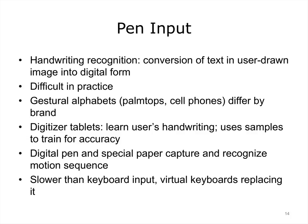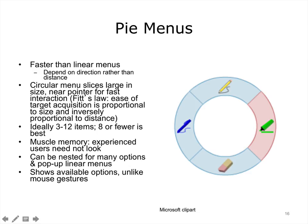Pen input is increasingly common, particularly with small tablets and handheld devices. Gestural alphabets turn users' writing into digitized form. This form of input is slower than keyboard input and is being replaced in handhelds by virtual pop-up keyboards. Pie menus are commonly found in video games. They are faster and more reliable for selection than linear menus, since they depend on direction rather than distance, and human ability to detect differences in degrees of angle is very acute. The most effective pie menus have 3 to 12 items and are easiest to use with 8 or fewer.